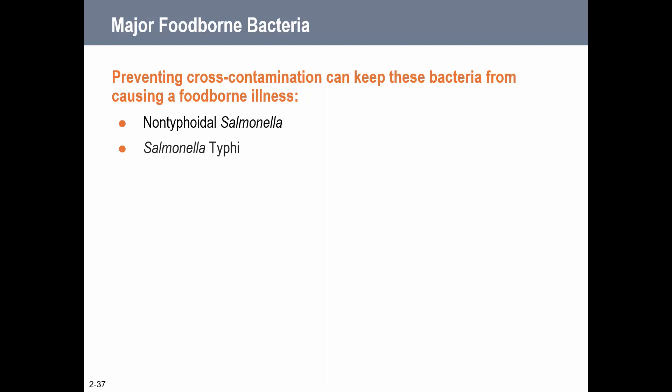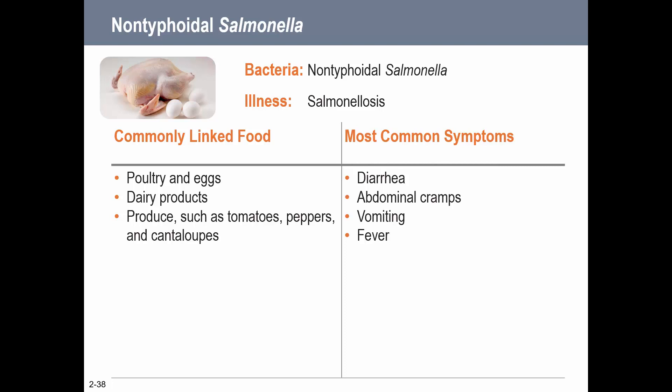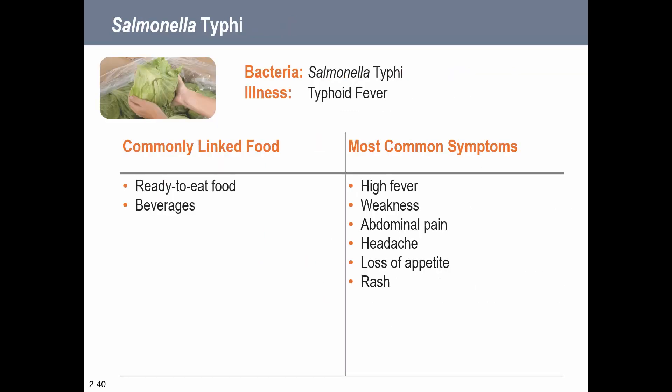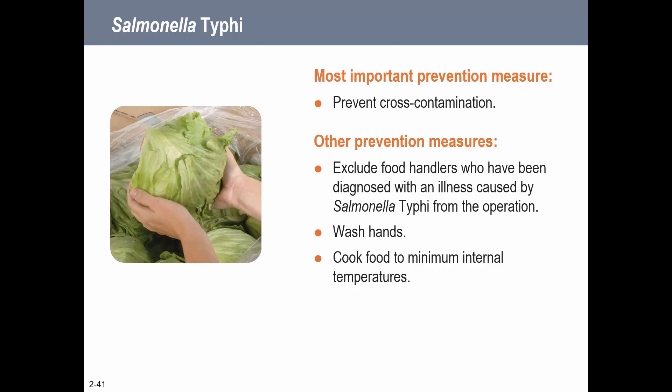For these next two, cross-contamination is the biggest thing to worry about. Non-typhoidal salmonella - the salmonella most people think of - is normally found in poultry and eggs, but can also be in produce and dairy. The 'don't eat raw cookie dough' kind of one. Cross-contamination prevention and cooking to minimum internal temperature are very important. Salmonella typhi is the variety that causes typhoid fever, found in ready-to-eat food and beverages and passed person to person. High fever is a symptom, and excluding infected food handlers is critical.